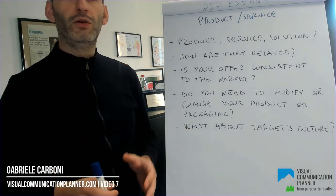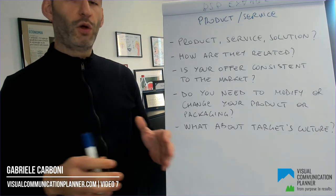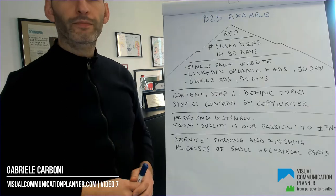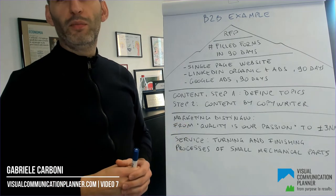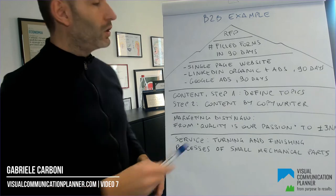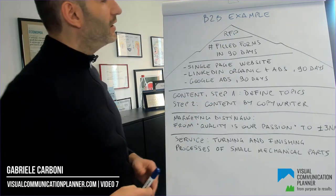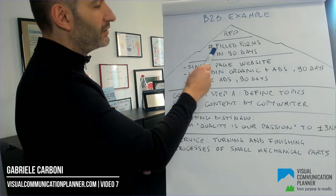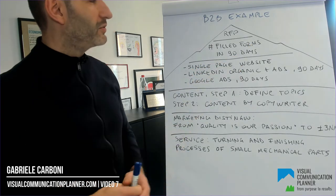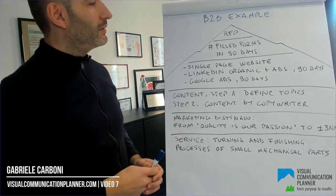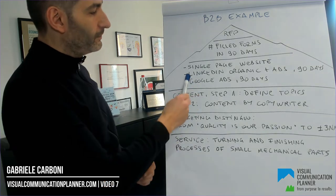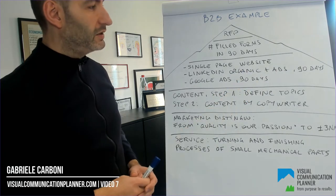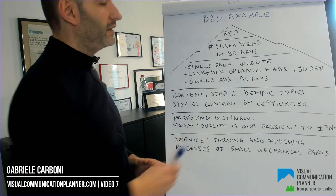You can find all the questions to fill your VCP on VisualCommunicationPlanner.com. Now let's go back to our B2B example. This is a resume of the example we are using in these videos. Goal: request for proposal from manufacturing companies in Germany. KPIs: filled forms through the website in 90 days from each channel. Channels and activities: LinkedIn organic plus LinkedIn ads for 19 days, Google ads for 19 days.